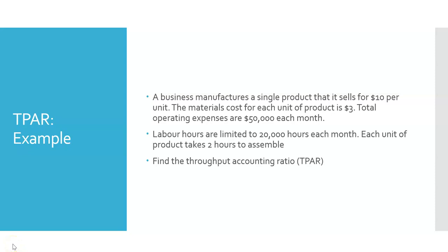So let's do an example here of working on TPAR. It's a brief example, but it's a good one. So what do we have here? We say we have a business that manufactures a single product that it sells for £10 per unit. So the selling price is £10. The material costs £3. So we're very clear on what the throughput is. The throughput is £7.